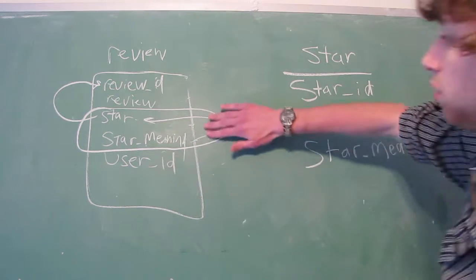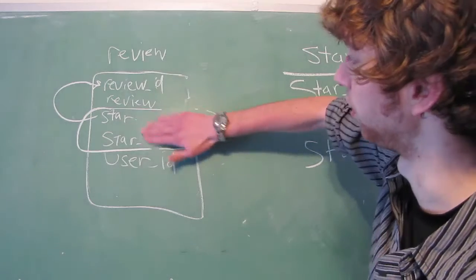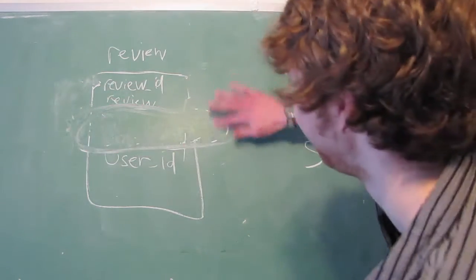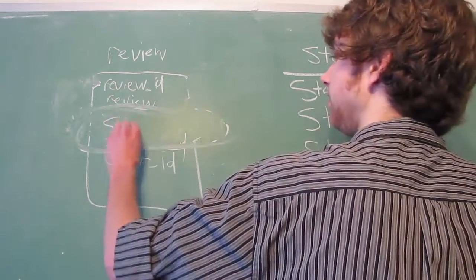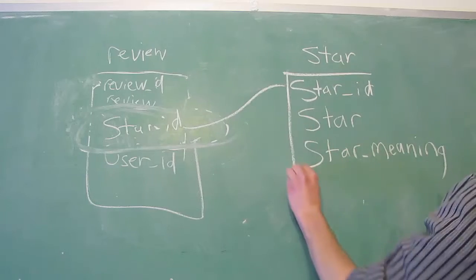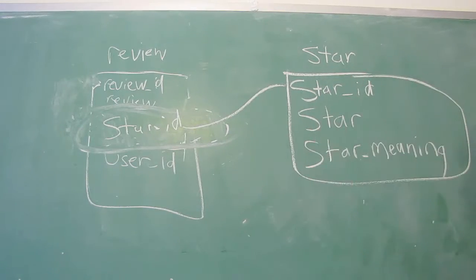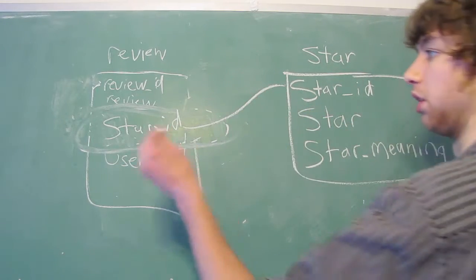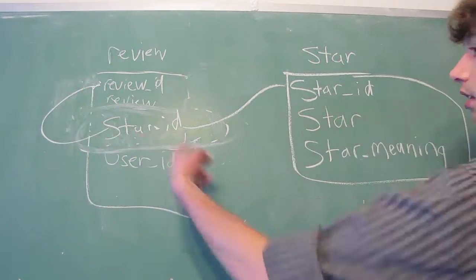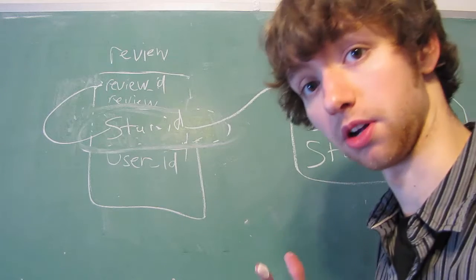And then over here, we're going to replace these columns. Let me make this a little prettier. And I just made it five times worse. But we're going to replace that with a star ID, which is going to reference this table over here. So now we don't have that problem because the only column over here is star ID. We don't have the star meaning, which was the real column that was causing the problem.